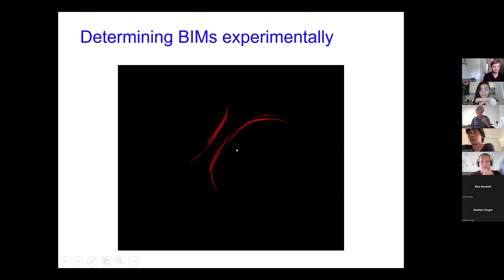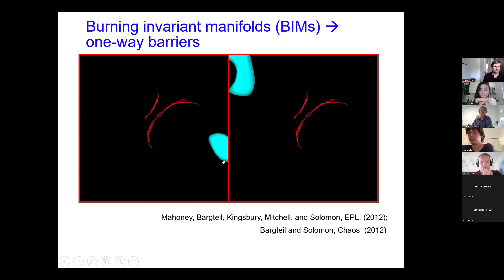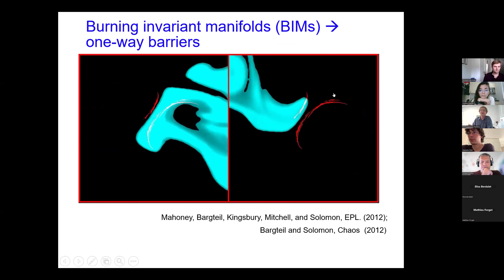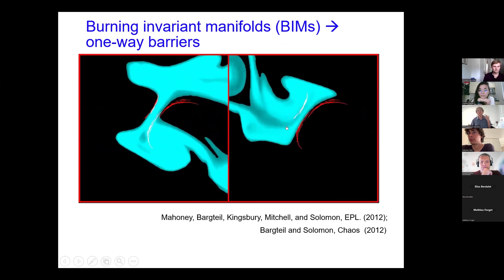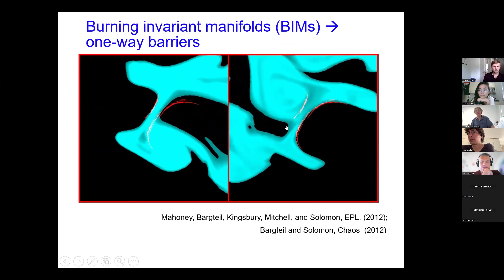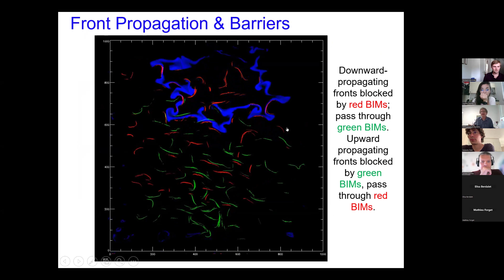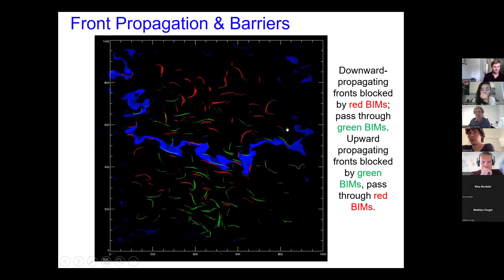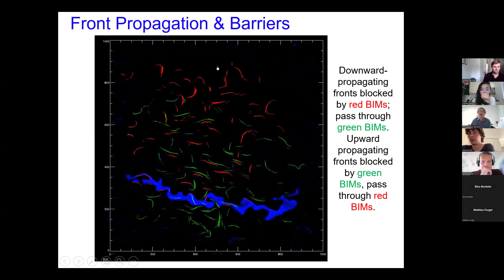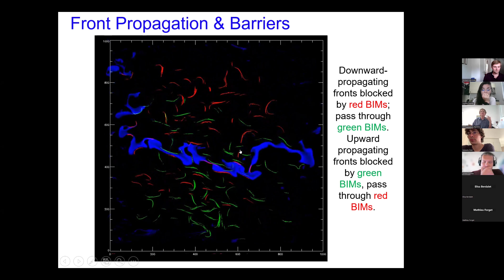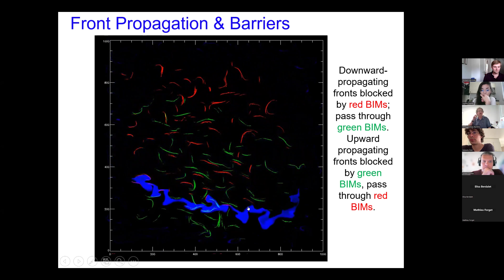The question is: are these things in fact burning invariant manifolds? If they are, they should be one-way barriers, and we can test that. Here are two additional experiments where we triggered the reaction on different sides — one goes right through the first one and stops at the second; the other goes right through that one and stops at the second as well. So yes, these things are acting as one-way barriers, as expected by the burning invariant manifold theory. In this movie, the red segments block downward fronts and the green segments block upward fronts. It's like hitting a solid wall — even though there's no physical barrier in the flow, these things are really acting almost like brick walls stopping the reaction fronts.